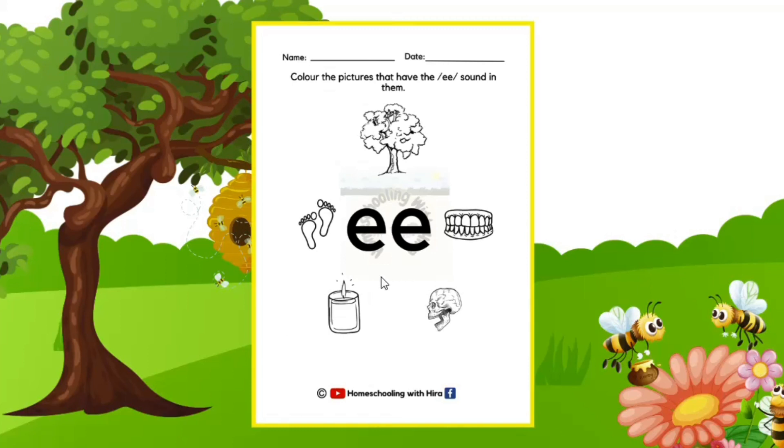You are amazing kiddos, and since you have done all these things very nicely, here is a treat for you. You have got a coloring page. If you hear the E sound in any of these pictures, you need to color in the picture. If you don't hear E sound, leave the picture as it is. The first picture is of a tree. Tree. Then we have teeth, then we have skull, next is candle, and the last one is feet. Tree, teeth, skull, candle, feet. Please color in the pictures that have E sound in them.